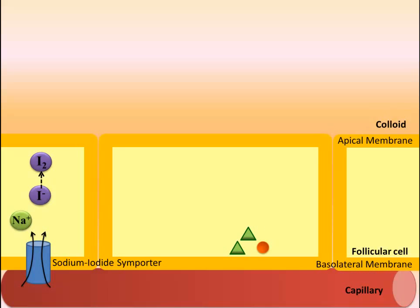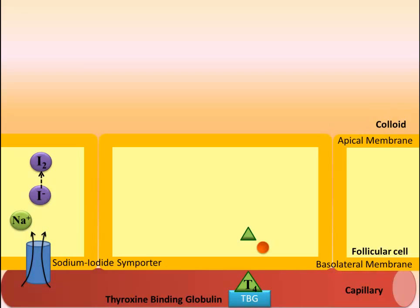T3 and T4 then diffuse across the basolateral membrane into the bloodstream. Once in the bloodstream, the thyroid hormones require transporter proteins, such as thyroxine binding globulins (TBG). Over 99% of the thyroid hormones within the bloodstream are bound to transporter proteins. As mentioned previously, approximately 90% of the secretory product is T4; however, T4 is converted at peripheral tissues into the more active T3 hormone.